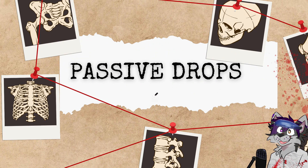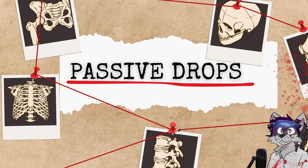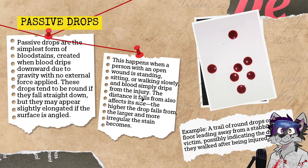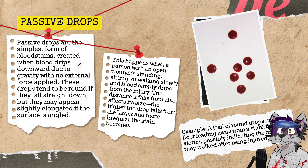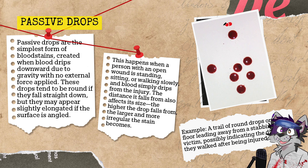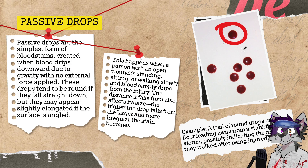The first type of blood spatter we have are passive drops. Passive drops are the simplest form of blood stains and they're created when blood drips downwards due to gravity.